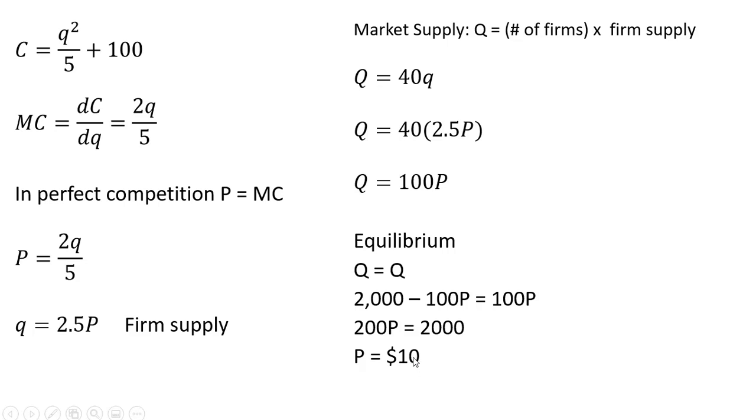To get the equilibrium quantity, we're going to take this $10 and plug it back into the supply equation. Either way, if we did our math right, we're going to see that the equilibrium quantity is 1,000. So here you see I plug this $10 back into the supply equation.